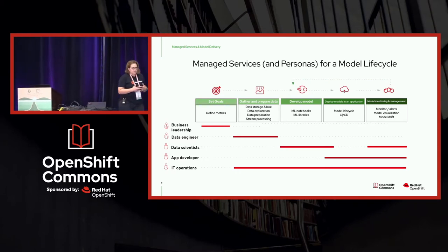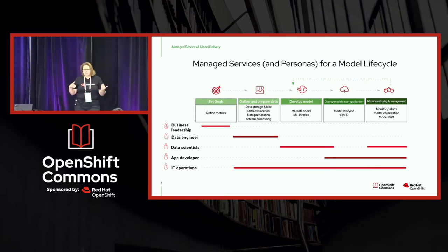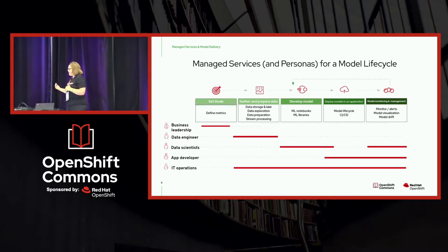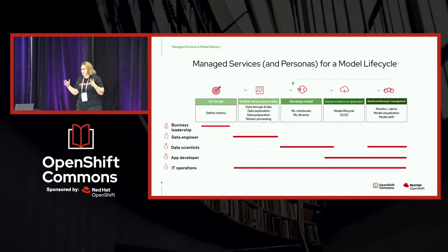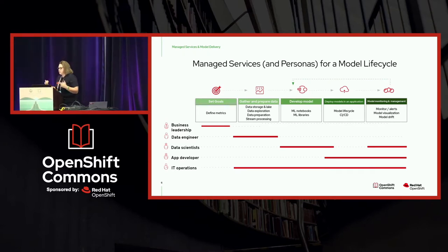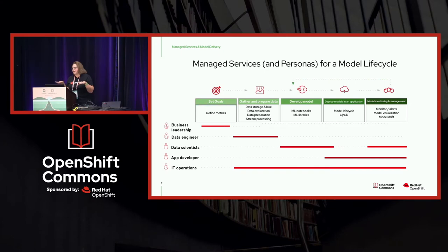When we take a look at managed services, we can divide them into four categories, and within those categories we have a number of personas that interact with them. The first category is gathering and preparing the data — that means data storage, data lakes, data warehousing, and stream processing — and it's really our data engineers who get excited about this. The second category is developing the model, where the data scientist creates the model and works with the algorithms needed to solve a particular business problem.